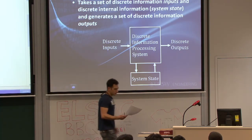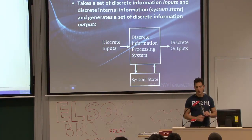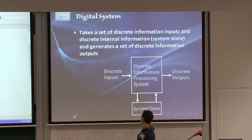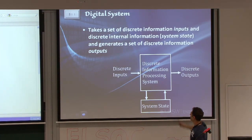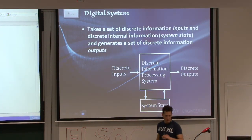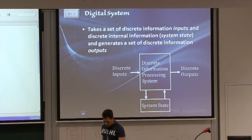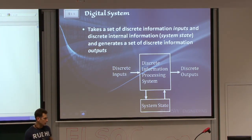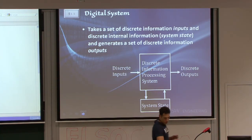So what's a digital system? By definition, it's a system that takes a set of discrete information inputs, it has some discrete internal information — the system state — and it spits out discrete information outputs. When we say discrete, it's not like 'shush, we shouldn't talk about it.' Discrete as in individuals, as in non-continuous.